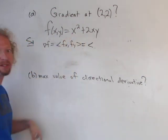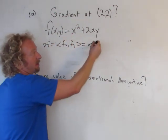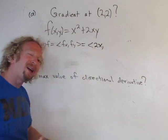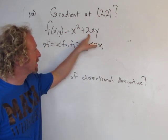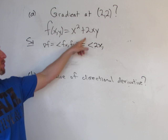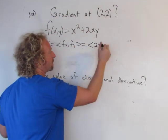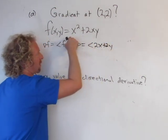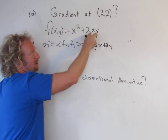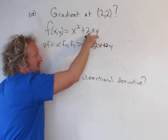The partial with respect to x is just going to be 2x at the derivative of x squared and we're treating y as a constant so the 2y hangs out, the derivative of x is 1 and so we just get 2y, so plus 2y. So the partial with respect to x is 2x plus 2y.